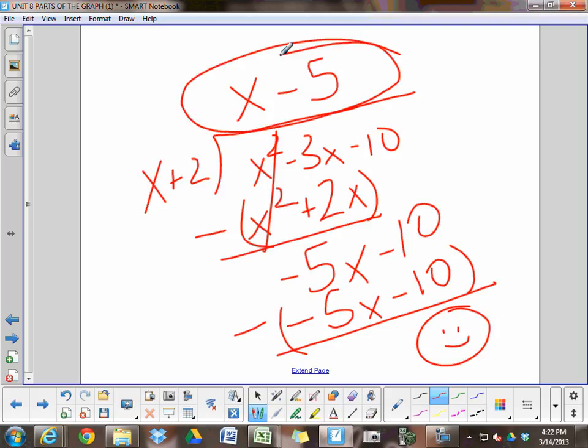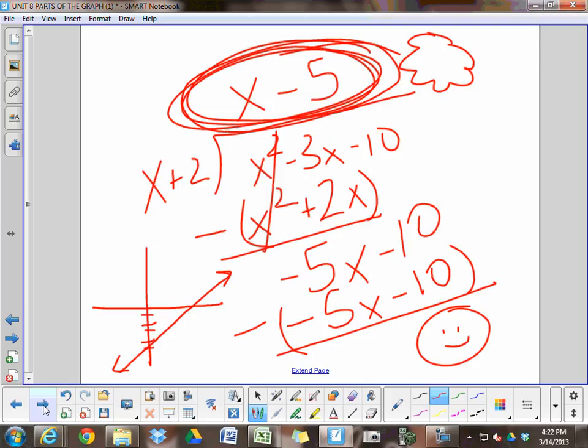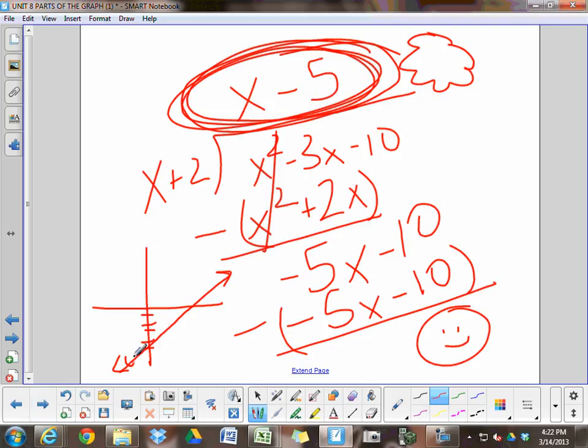That means that this remaining function is basically where the graph lives. x minus 5. It's not an asymptote. It's the actual graph. If there's no remainder, this is not an asymptote. This is the actual graph. It just happens to have a hole in it at negative 2, negative 7. If you were graphing it, you would put a hole there.